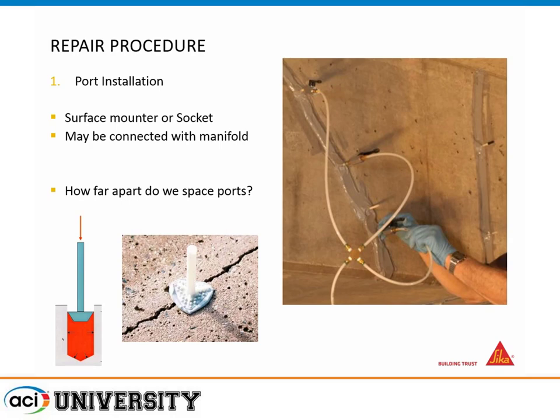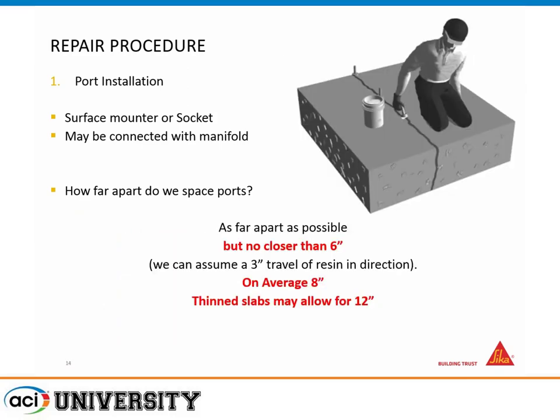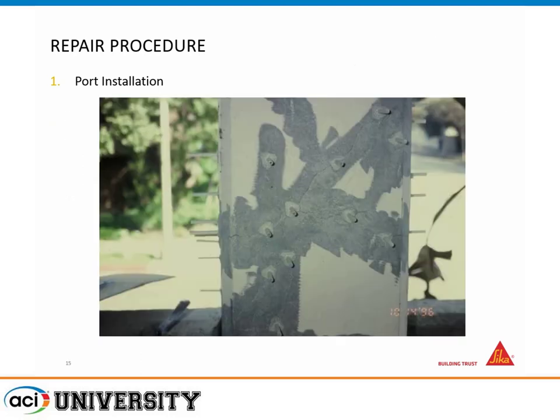How far apart do we space the ports? Typically they're going to be 8 inches apart, but they can go no closer than 6 inches. For thinner slabs or finer cracks, it could be 12 inches, and I have seen applications where they've gone higher than that. Here's a good example of a fairly fine crack with good preparation and good port placement — you can see that depending on the width of the crack in certain areas, the ports were spaced in relation to that: the finer the crack, the closer the ports were together.